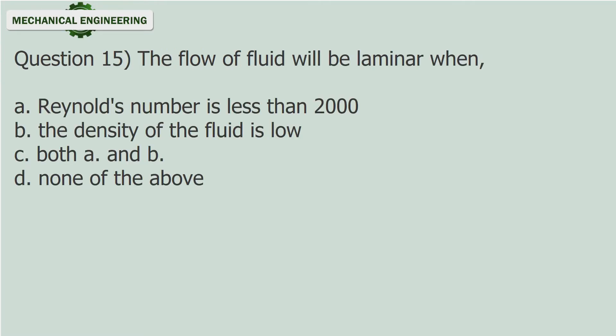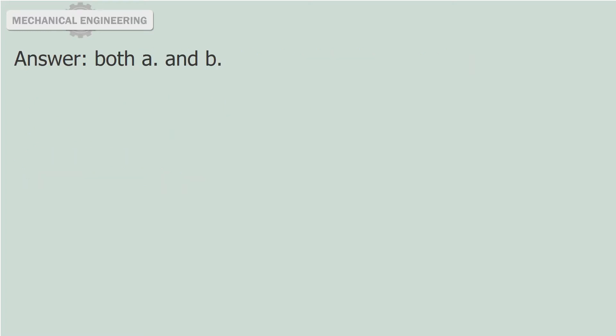Question 15. The flow of fluid will be laminar when: A. Reynolds number is less than 2000, B. The density of the fluid is low, C. Both A and B, D. None of the above. Answer: Both A and B.